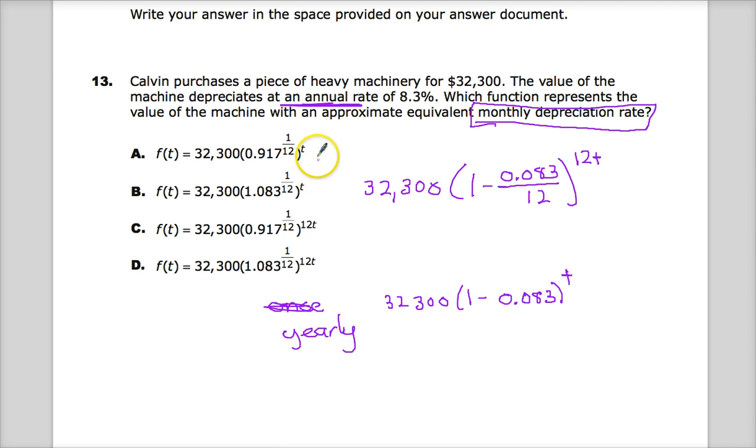They want me to apply it monthly. So, I need to take the annual rate, break it out into a smaller percentage. So, it will be broken into 8.3% divided by 12. But, if I do break it into 12 parts, I need to apply it.